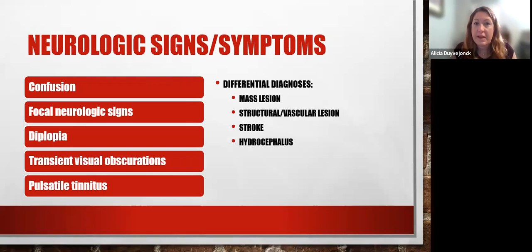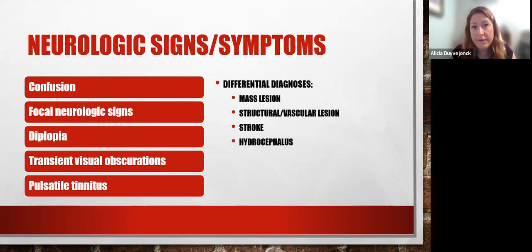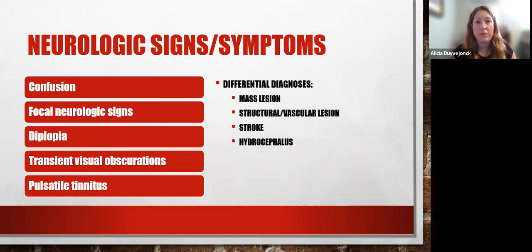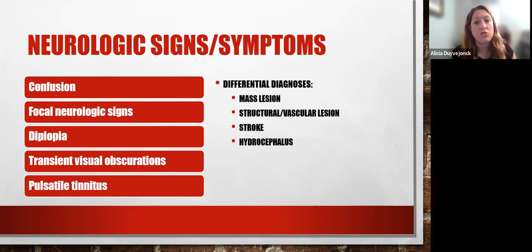Neurologic signs and symptoms that should raise red flags include confusion, focal neurological signs such as unilateral weakness or facial droop, pupillary abnormalities, diplopia, transient visual obscurations — which can be monocular or binocular — and pulsatile tinnitus. In these situations, we want to rule out mass lesions, structural or vascular lesions, stroke, or hydrocephalus.